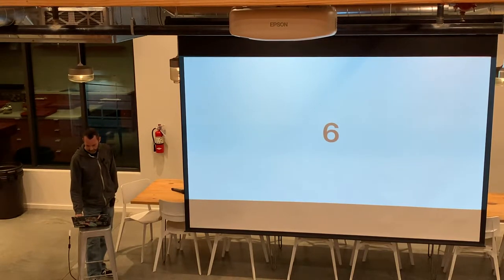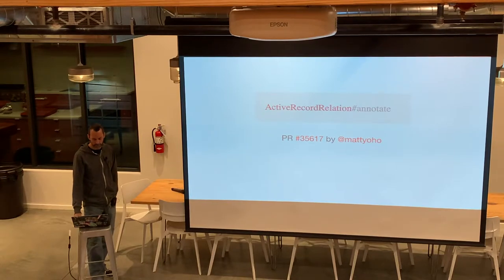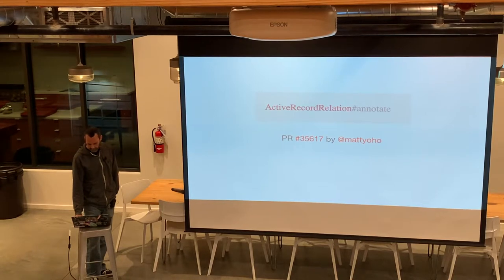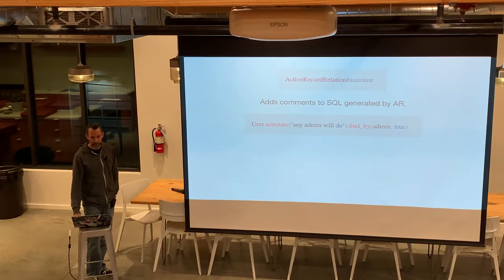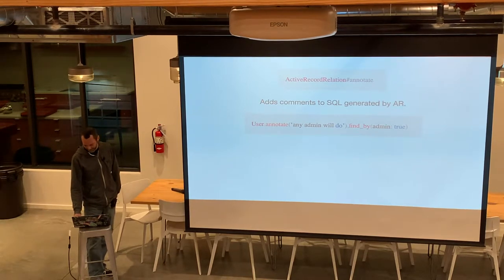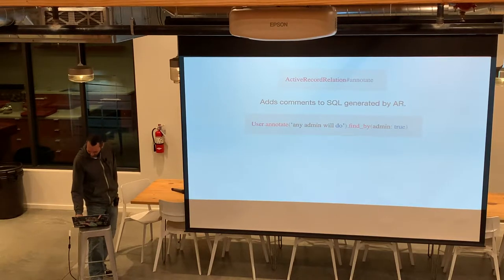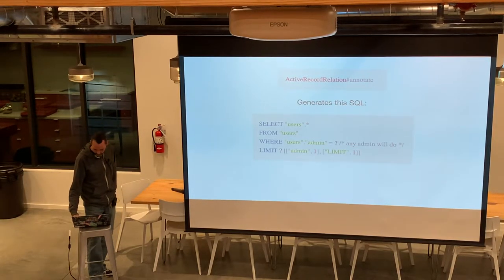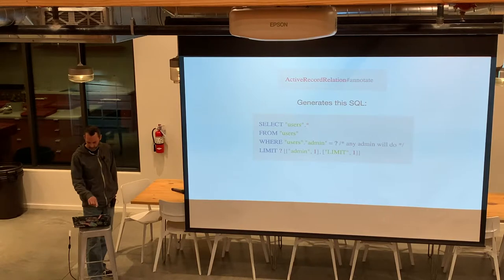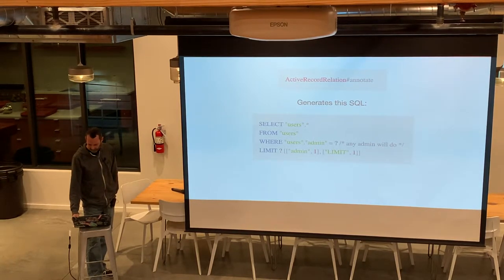Number six: Active Record relation annotate, PR 35617 by Matty Oho. Annotate gives you a way to add comments to the generated SQL. So in my example, User.annotate('any admin will do').find_by(admin: true) — kind of has a nice song-like ring to it. That will generate SQL: SELECT users.* FROM users WHERE users.admin IS true, with the comment 'any admin will do', and a LIMIT 1 because find_by returns one record.